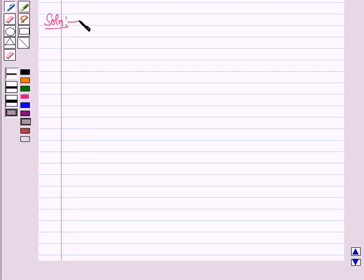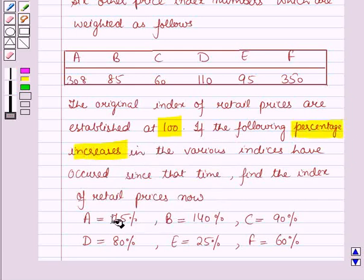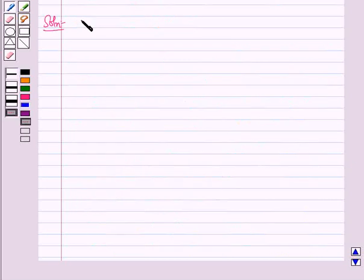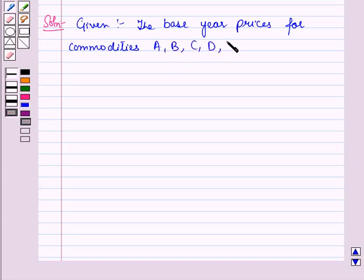Now we will start with the solution. In the question, the weights for the different commodities are given to us, and it is also given that the initial index of retail prices are established at 100. The percentage increases in the various indices which have occurred since that time are also given to us. The base year prices for the commodities A, B, C, D, E, and F are 100 each.